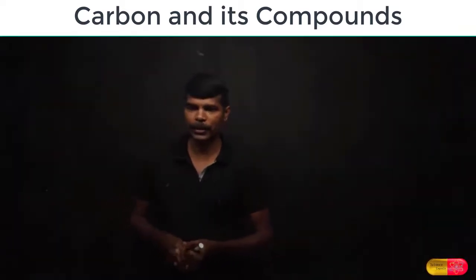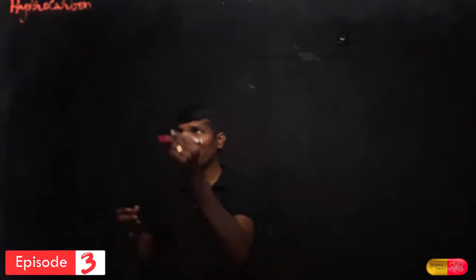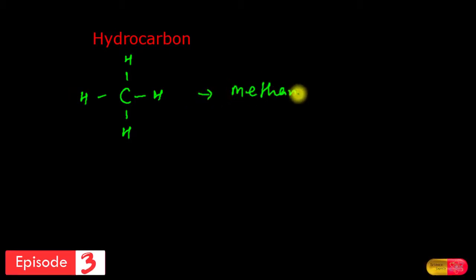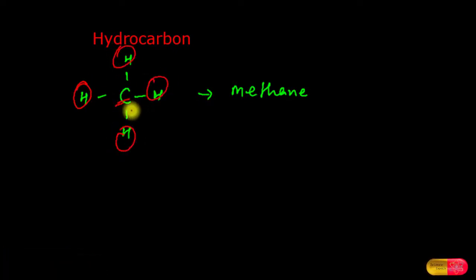Let us start our learning process with the hydrocarbon. The definition of a hydrocarbon: a hydrocarbon is a compound which is made up of hydrogen and carbon. The name itself tells us that the compound is made of hydrogen and carbon. Those compounds which are made of only hydrogen and carbon we call hydrocarbons.